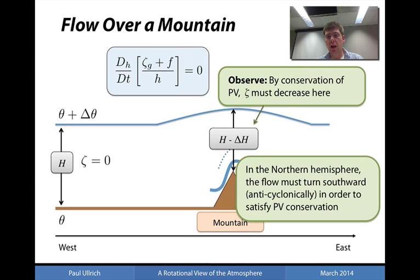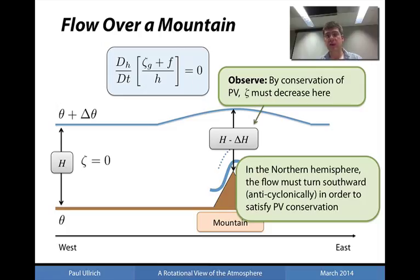Now what happens when the fluid column passes over the mountain? By conservation of potential vorticity, the height of the fluid column is now much smaller than the initial height. Consequently, the relative vorticity — which was initially zero — must now be negative so that the numerator is going to be equal to the denominator, so that the ratio is maintained and potential vorticity is conserved. So in the northern hemisphere, when the height of the fluid column decreases, the flow must take up negative or anti-cyclonic vorticity and hence will turn southward in order to satisfy potential vorticity conservation.